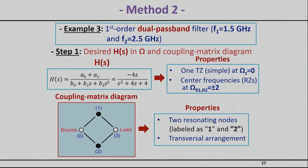Example 3: consider a coupling diagram with two resonators in the direct path from source to load, with two parallel paths. This is a very good and easy way to realize a dual passband filter — a useful capability since many current communication standards require dual, triple, or quad bands. This arrangement is called a transversal arrangement, where you simply connect more resonators from source to load as you add more bands.